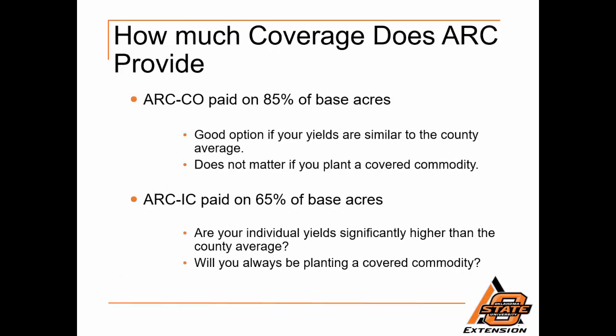How much coverage does Agricultural Risk Coverage provide? ARC County is paid on 85% of the base acres, and can be a good option if a producer's yields are similar to the county average yields. Also, it does not matter if you plant a covered commodity if you are enrolled in ARC County. Alternatively, if you're enrolled in ARC Individual, it is paid on 65% of base acres. ARC Individual is good for a producer if their individual yields are significantly higher than the county average, but you must plant a covered commodity every year in order to receive payments from ARC Individual.